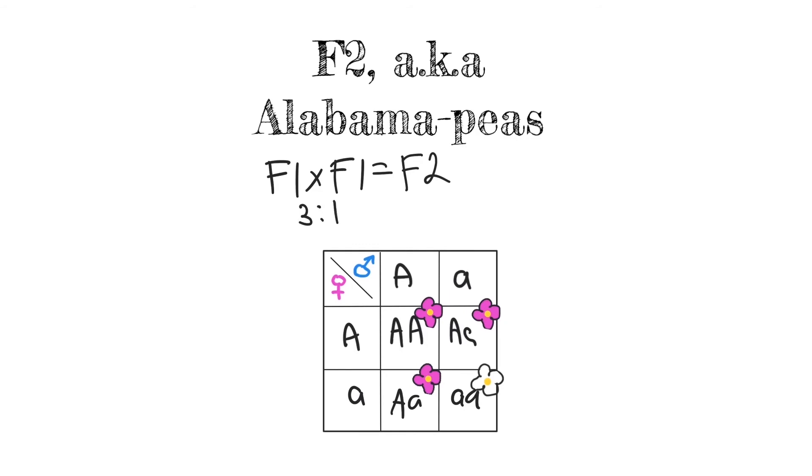And what you have is you always have this ratio in your F2. If you're combining one F1 plant, carrying both the dominant and the recessive allele with another plant that has the same genotype.